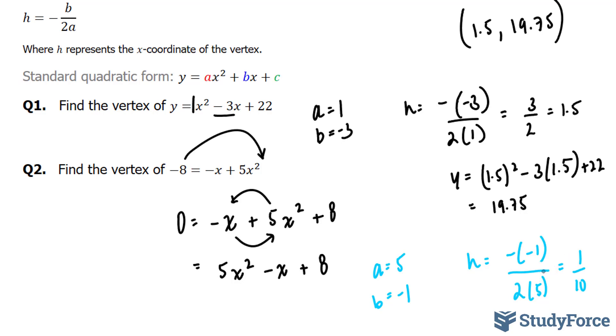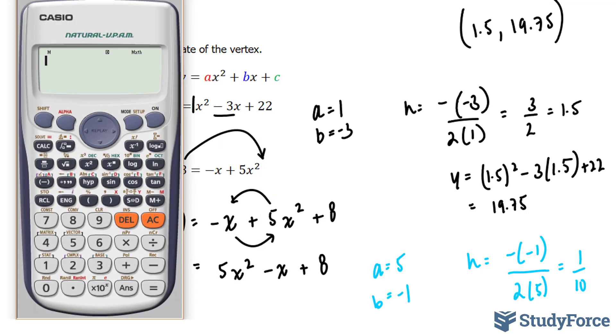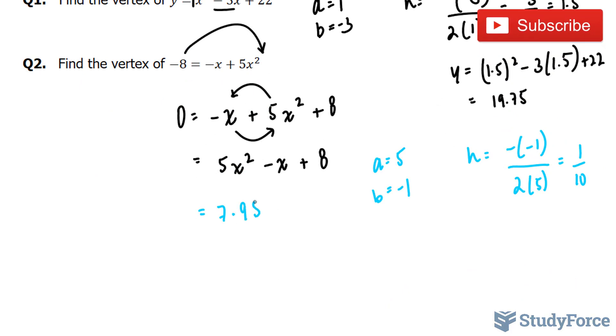We will then plug this number back into our equation. You can plug it into any of these different versions. It doesn't matter. So we have 5 times 1 over 10 to the power of 2 minus 1 over 10 plus 8. And we end up with 7.95.